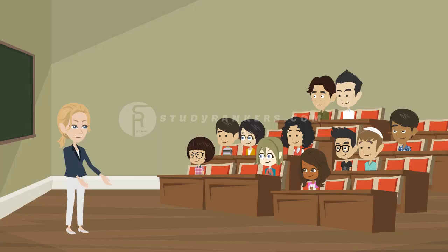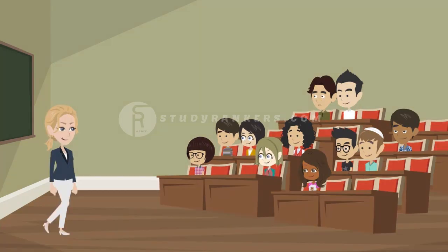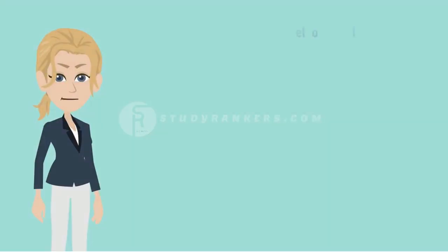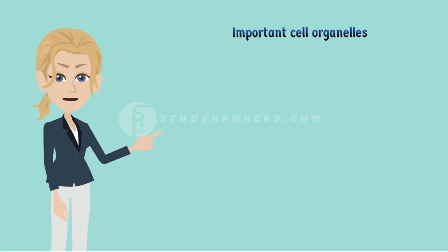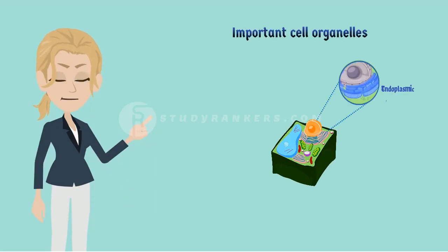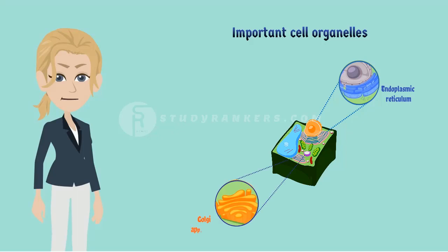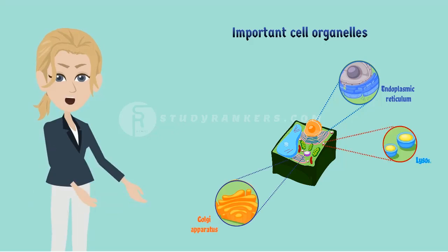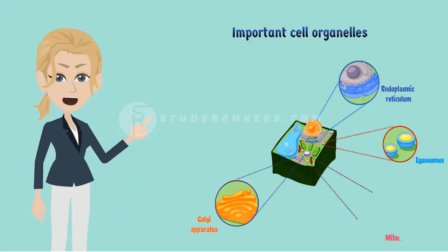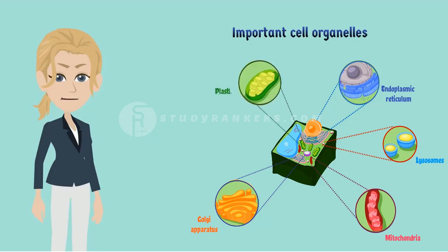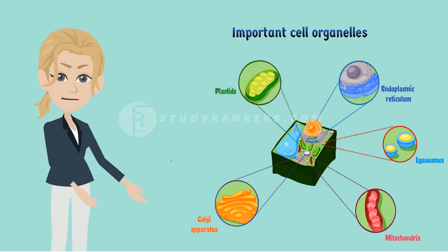Can anyone tell me examples of cell organelles? I can, ma'am. Endoplasmic reticulum and vacuoles are both examples of cell organelles. Right, Shikha. Some important cell organelles are endoplasmic reticulum, Golgi apparatus, lysosomes, mitochondria, plastids, and vacuoles.